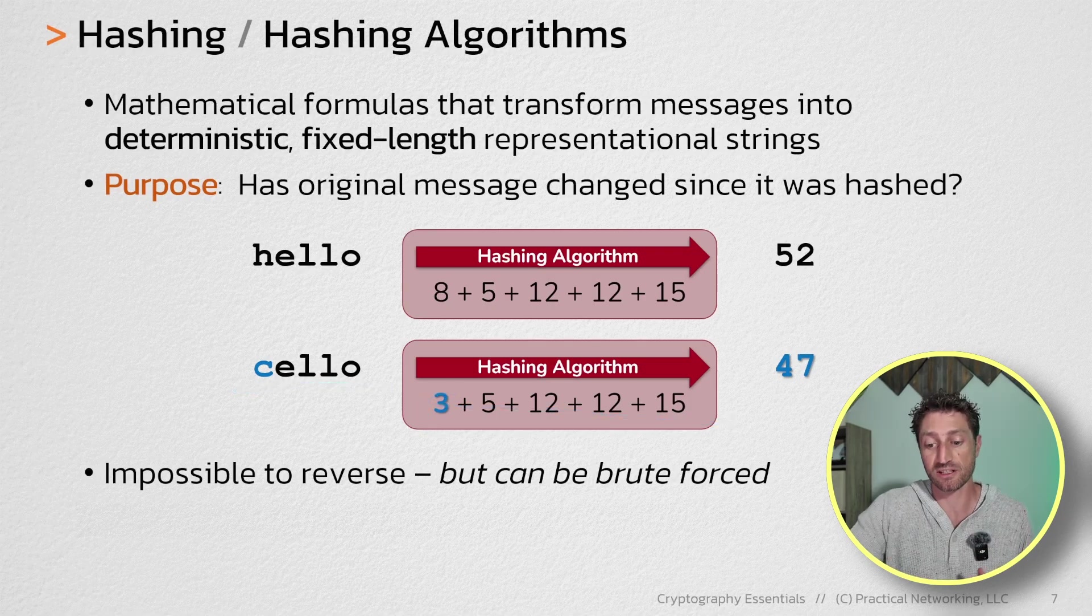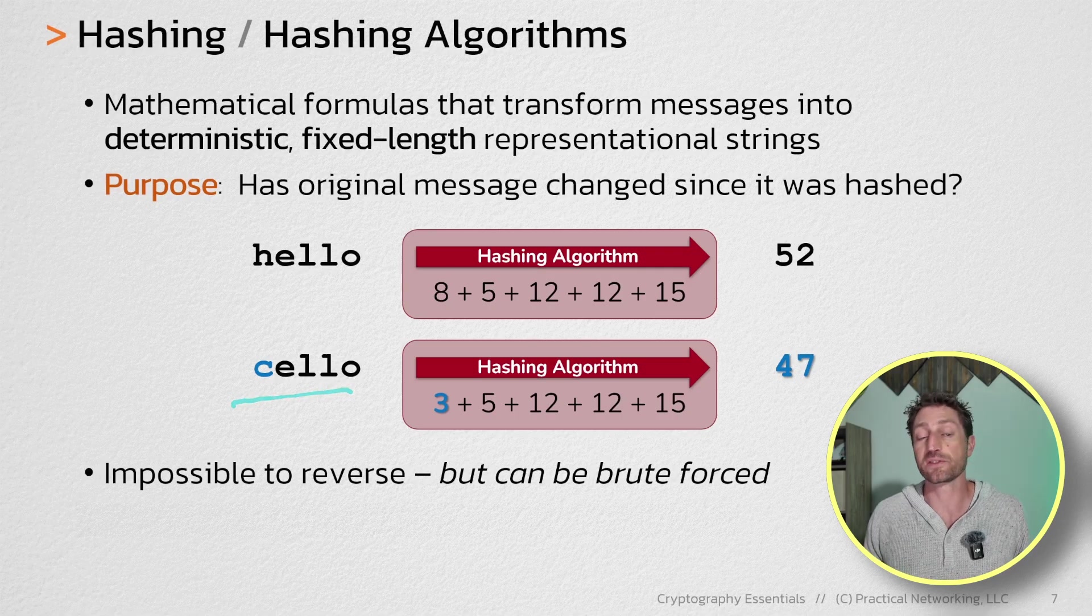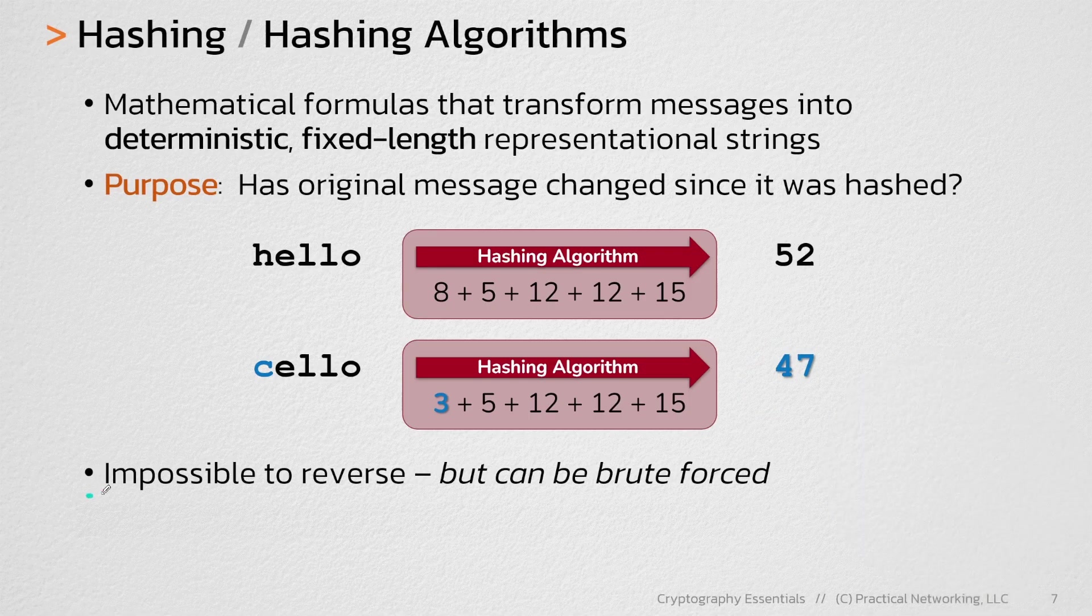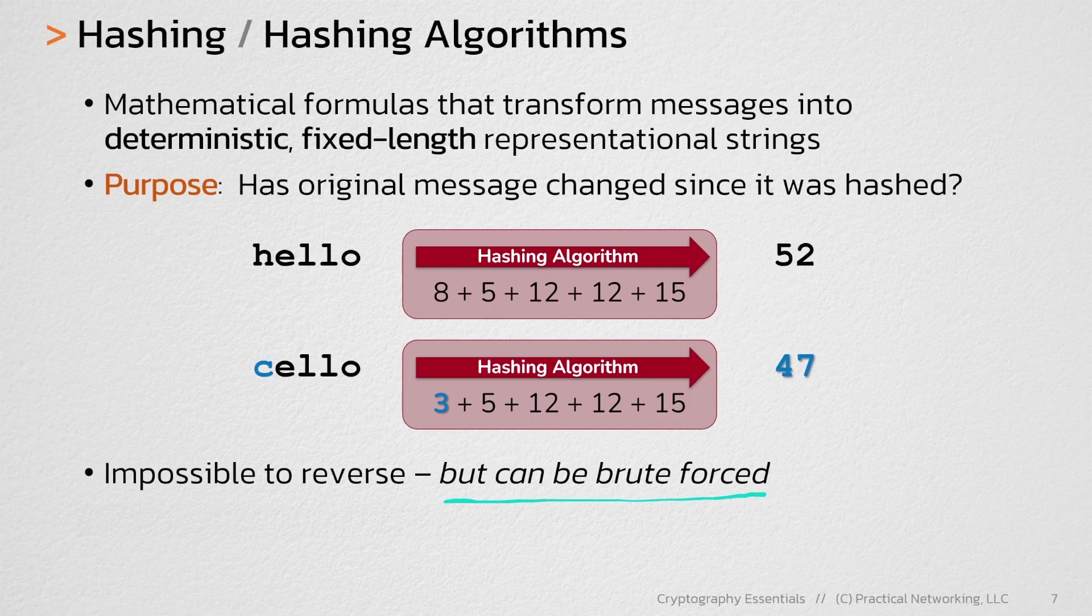But if I know your message is only 5 characters, then it's easy for me to run through every single possible combination of adding up 5 character words. This would guarantee that I'd end up on 47 at some point, as well as discover a bunch of other messages that also add up to 47 as well. So even though hashing is impossible to reverse, keep in mind you can brute force a hash if you know a message is of a certain size.